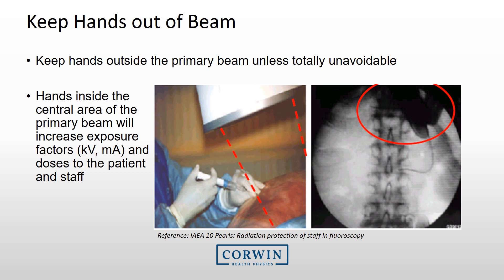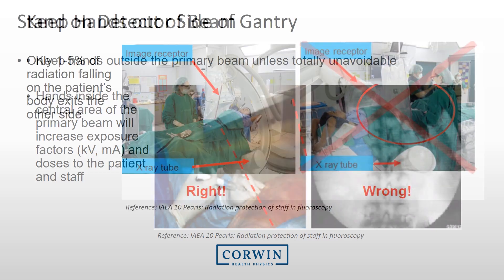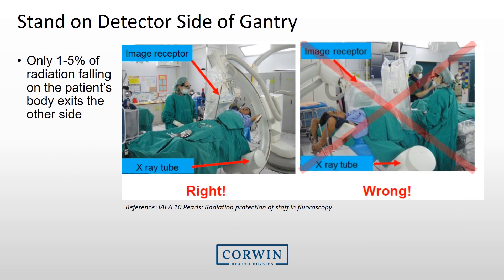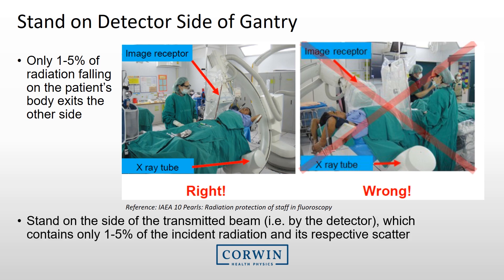When working on the patient, keep hands outside the primary beam unless totally unavoidable. Hands inside the central area of the beam will increase techniques and doses to both the patient and staff. Make every effort to position yourselves on the detector side of the gantry. Only 1–5% of radiation entering a patient's body exits the other side, so standing on the detector side greatly reduces exposure.